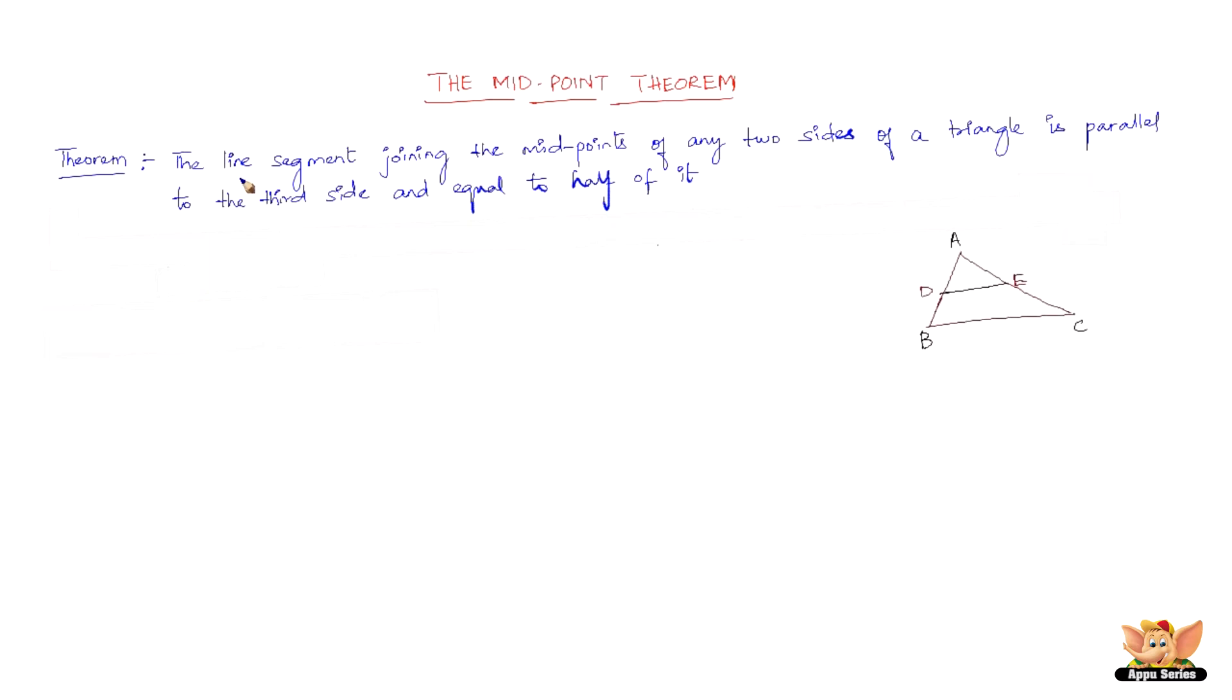The theorem itself states that the line segment joining the midpoints of any two sides of a triangle is parallel to the third side and equal to half of it.